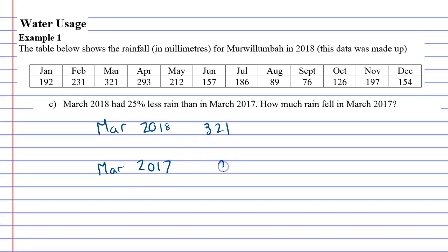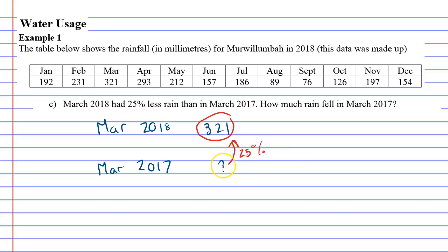We don't know how much fell in 2017, but we know that March 2018, which had 321, this is 25% less than the unknown amount. So what we've got to do is find 25% of that unknown and subtract it to get 321.